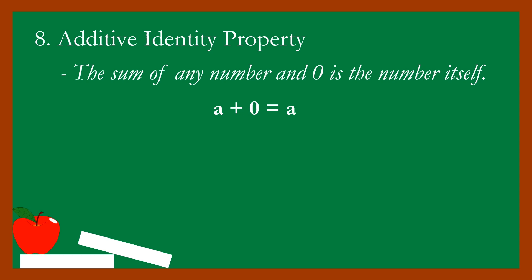When you add zero to a certain number, the result is that particular number itself. For example, seven plus zero is equal to seven. Next, negative twenty-eight plus zero is equal to negative twenty-eight. That is what the additive identity property means.